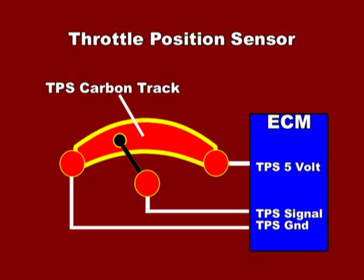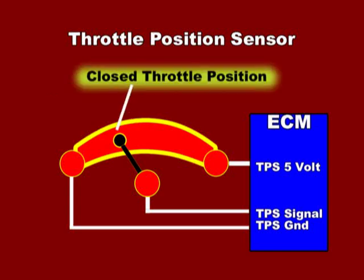TPS is a main input to the ECM which is used to calculate the throttle plate's rate of opening, transmission shift points, engine load, and various other control loops. Most TPS today are auto zeroing, meaning that whenever the ignition key is cycled off and on, the ECM assumes the lowest TPS value as the minimum or closed throttle position.